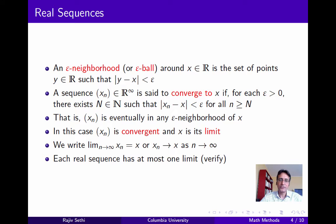You should verify for yourself that every real sequence has at most one limit, which you can show in a couple of steps by contradiction. Suppose a sequence xn has two limits. Let epsilon be any number less than half the distance between these two points, and you can show that it's impossible for the sequence to be within an epsilon neighborhood of both points simultaneously.